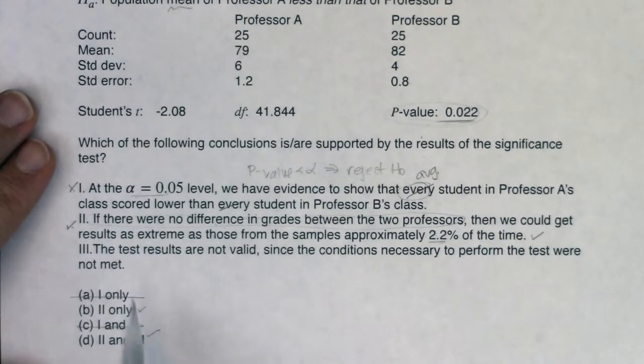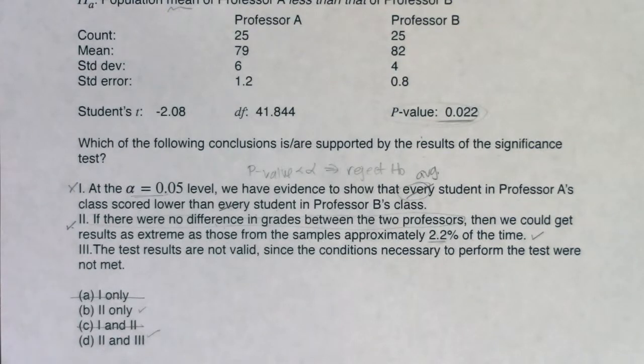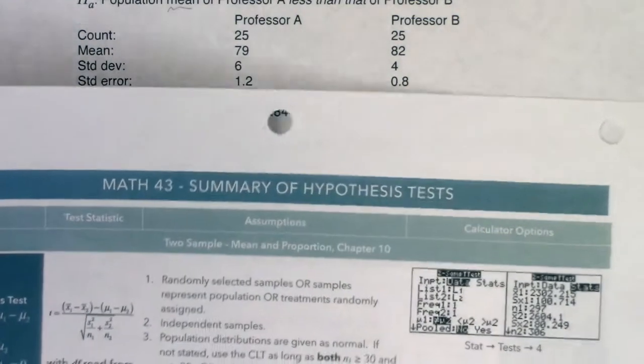All right so let's find out if sentence three is true. The test results are not valid since the conditions necessary to perform the tests were not met. All right well let's try and figure out if that's correct or not. So I'm going to go through my assumptions here. Let me get my trait table. We're in mean land. It's two sample independent so here we go. Let's see if we got this.